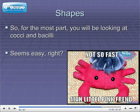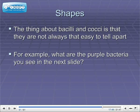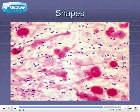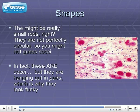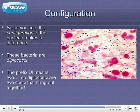The thing about bacilli and cocci is that they're not always easy to tell apart. For example, bacteria that seem not perfectly circular might look like short bacilli or funky-shaped cocci. They might be really small rods. In fact, these are cocci, but they're hanging out in pairs, which is why they sort of look funky. The configuration of the bacteria makes a difference. We refer to these as diplococci — the prefix 'di' means two, so diplococci are two cocci hanging out together.